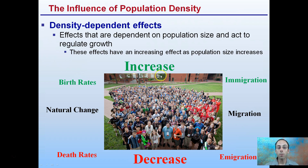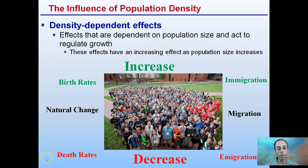A way to increase population would be birth rates or immigration. A neutral change would be migration within an area. A way to decrease population through density-dependent factors would be through death rates and emigration.